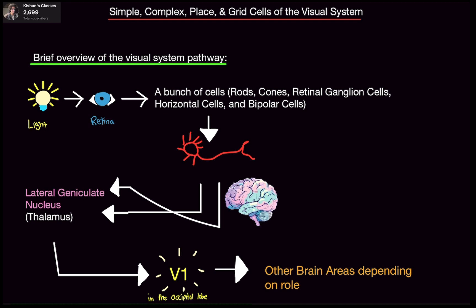Let's start off with a brief overview of the visual system pathway. First, light must enter the retina. After the retina, it's basically going to be exciting or inhibiting a bunch of cells like rods and cones, retinal ganglion cells, horizontal cells, and bipolar cells. I'm not going to go in depth on each of these cells in this video because it would take over an hour — but if you want me to make a specific video on these cells, let me know in the comments.